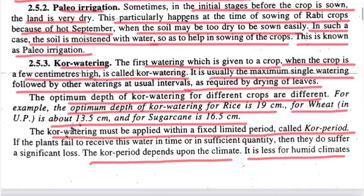Next is paleo irrigation. We need to apply water to the crop in the initial stage before sowing. Because the soil is dry, when we give water to the dry soil, it moistens and softens the soil so the soil will soak it well. This type of irrigation — giving water before sowing to moisten the dry soil — is called paleo irrigation.